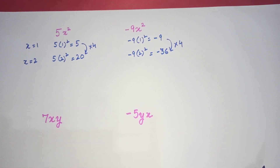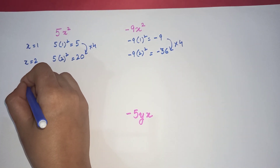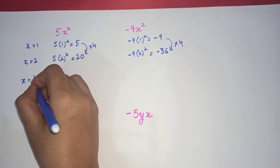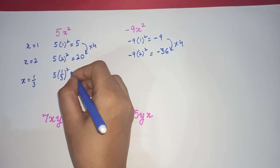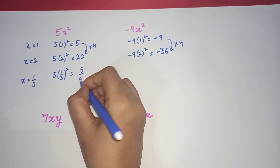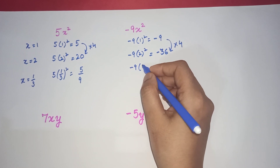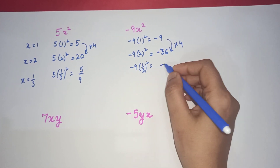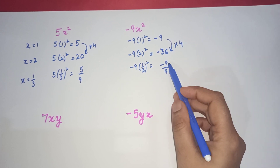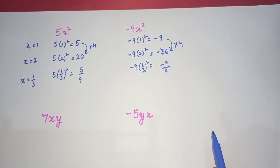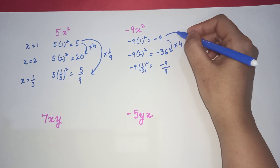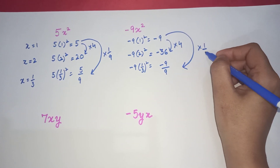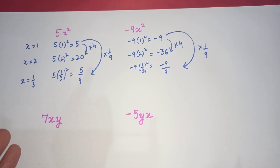That means these two terms are behaving in a similar fashion so far. Let's take a fractional value of x this time. I am not going to cancel anything out because I just want to see how the terms are growing. If you compare with the first term, it is getting multiplied by 1 over 9, and here also it is getting multiplied by 1 over 9. So these are again growing in a similar fashion — so these are like terms.